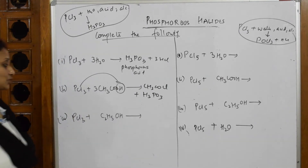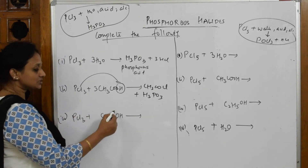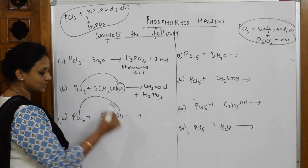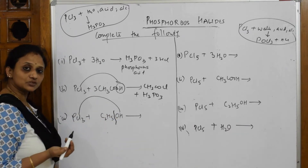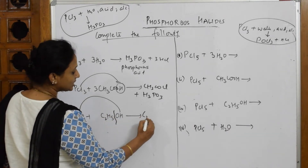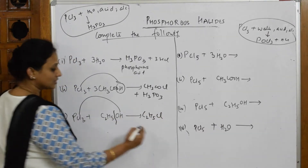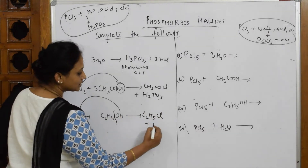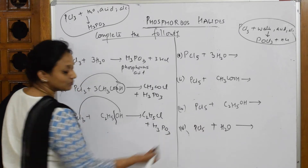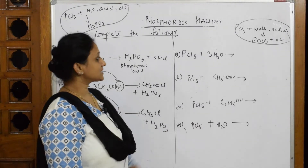Coming back to PCl₃ with ethanol: the OH⁻ is the nucleophile, Cl replaces the OH⁻, and you get C₂H₅Cl. You are also left with H₃PO₃. That is the balanced reaction for PCl₃ with ethanol.